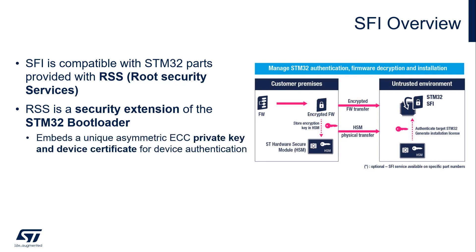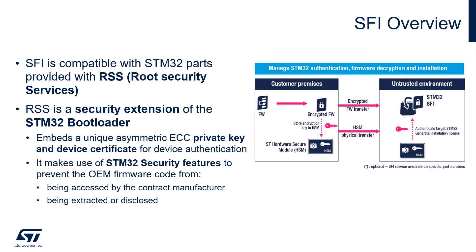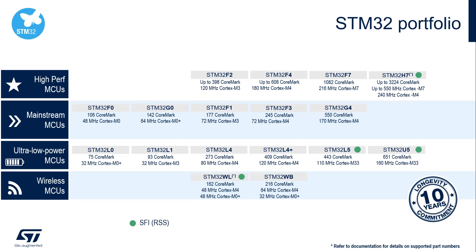RSS is a security expansion of the STM32 system bootloader, responsible for the SFI steps that happen at the device side. RSS embeds a unique asymmetric ECC private key together with a corresponding certificate for device authentication, and makes use of STM32 security features such as readout protection to prevent the OEM code from being accessed, extracted, or disclosed. SFI is supported by STM32H7, STM32WL, STM32L5, and STM32U5, all provided with the RSS extension of the system bootloader and ROM code.